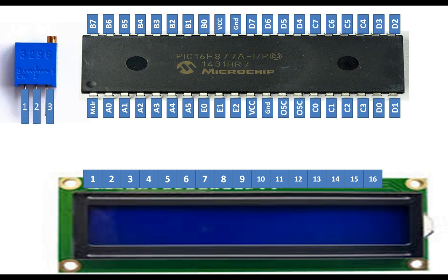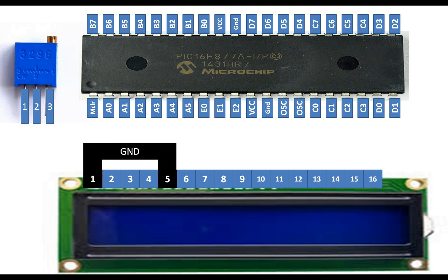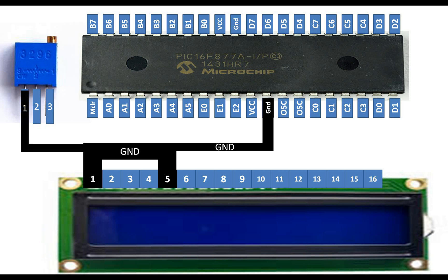This potentiometer has three pins. You connect pin number 1 and pin number 5 of the LCD and then send them to the common ground of the PIC 16F877A microcontroller. Then you connect pin number 1 of the variable resistor to the same ground. In short, you ground pin 1 and pin 5 of the LCD along with pin 1 of the potentiometer to common ground.